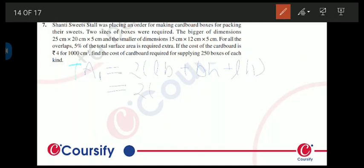L is 25, b is 20, plus 20 into 5, plus 5 into 25. So this will come out to be 1450 cm². So area of box 1 is 1450 cm².